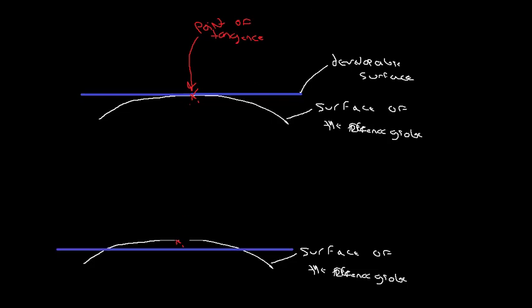So this is our developable surface. And with the secant case, we have these two points of intersection. This top one up here is the tangent case, and this is the secant case.